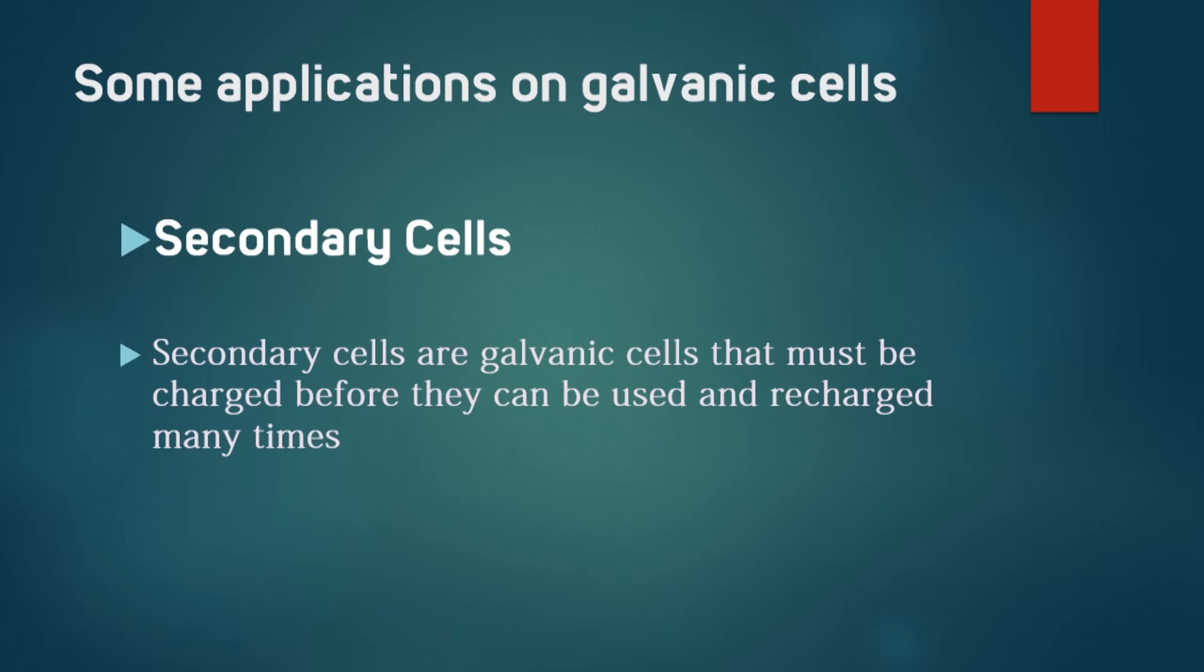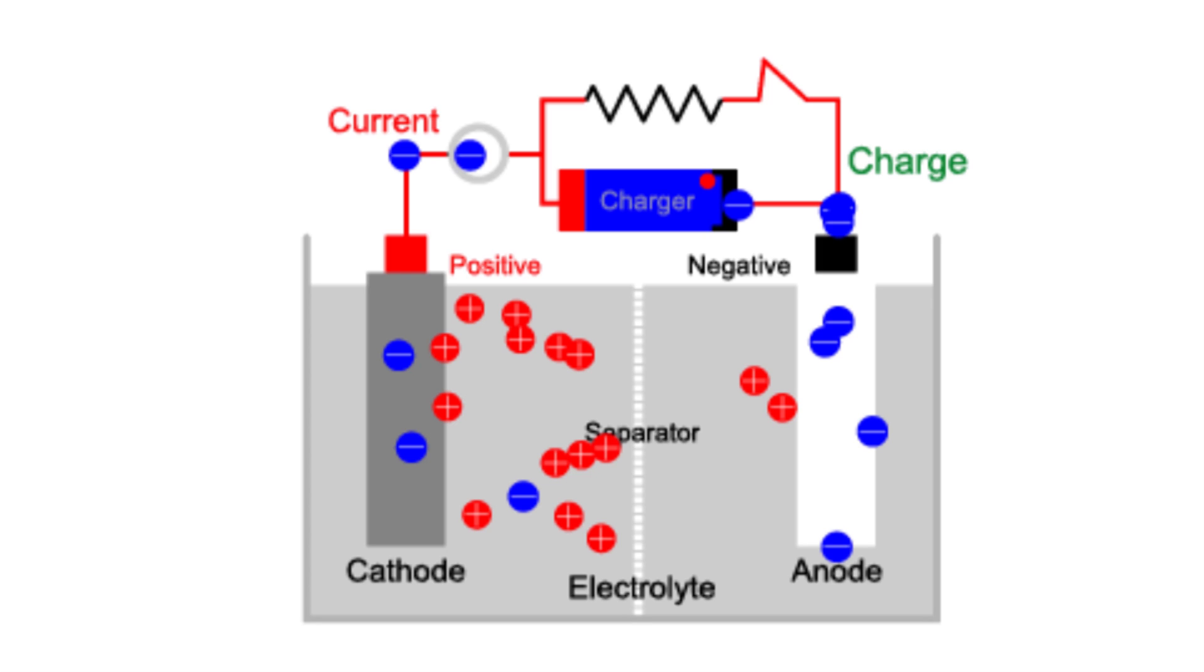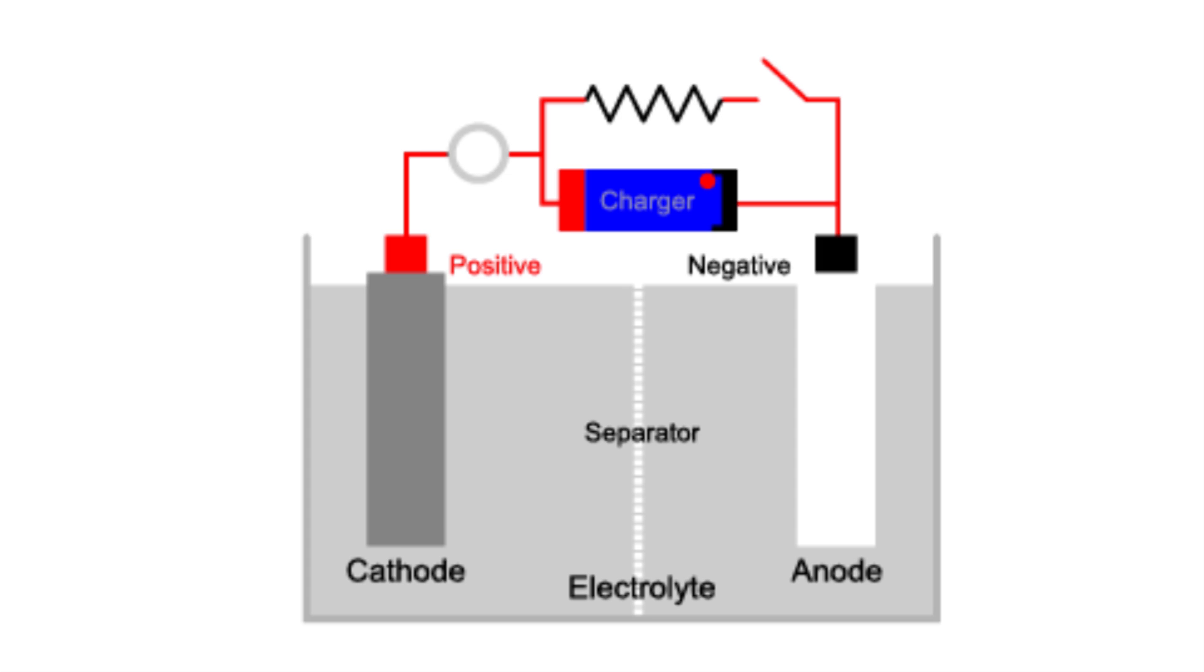In other words, the charging process needs an outside source EMF to occur. Here is a simple animation showing a typical secondary cell. During the discharging process, the electrons flow from the anode to the cathode, where the anode is the negative electrode and the cathode is the positive electrode.